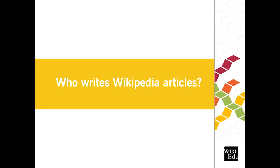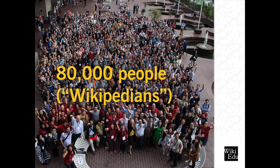We know millions of people are getting information from Wikipedia, but where does this content come from? Wikipedia is edited by volunteers. All content comes from volunteer editors, whom we call Wikipedians. There are about 80,000 active editors from around the world, and none of them get paid to write or edit articles. Since they're volunteers, Wikipedians tend to write about what interests them most. What this means for Wikipedia is that there are some content gaps in areas where the current group of volunteers is just less interested — and that's where our program really comes in.